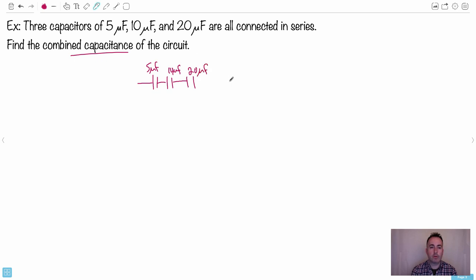What you do is use this idea: one over C in series. We say it's one over five. Keep in mind, since they're all microfarads, I can be lazy and just say one over five plus one over 10 plus one over 20. That gives you your C in series. You add these up and then do one over that.